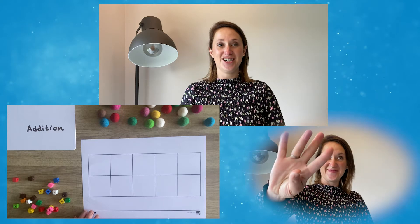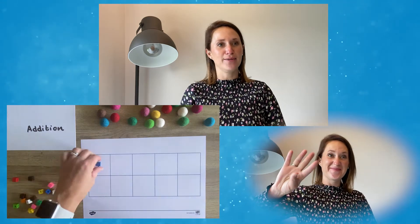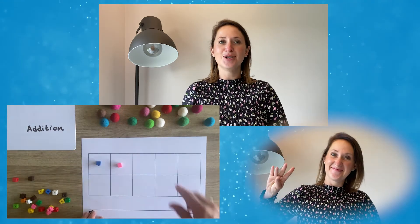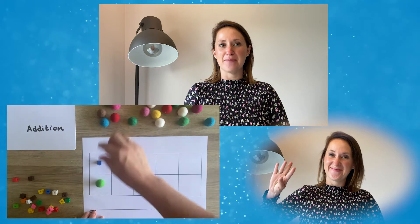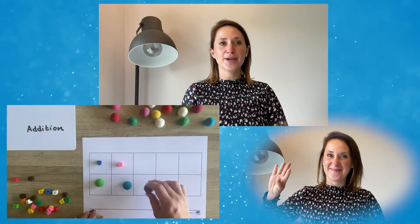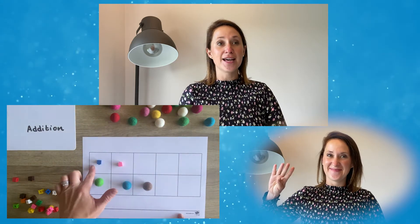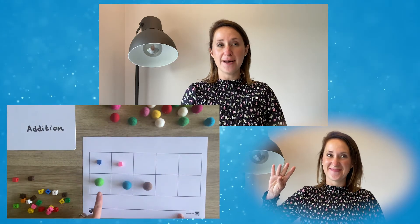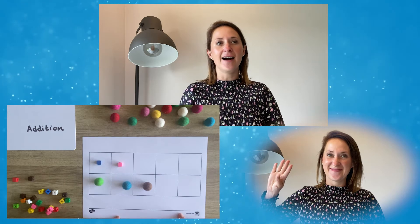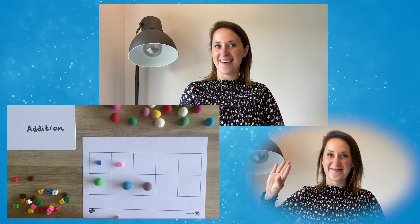Simple addition. Use the top row to place a couple of numbers, two numbers for example. Then the bottom row could be used to put three numbers. How many are there all together?